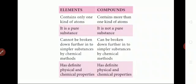What is the difference between an element and a compound? Elements contain only one kind of atom, while compounds contain more than one kind of atom. Since elements have only one kind of atom, they are pure substances, whereas compounds can be broken down by chemical methods. Both elements and compounds have definite physical and chemical properties.